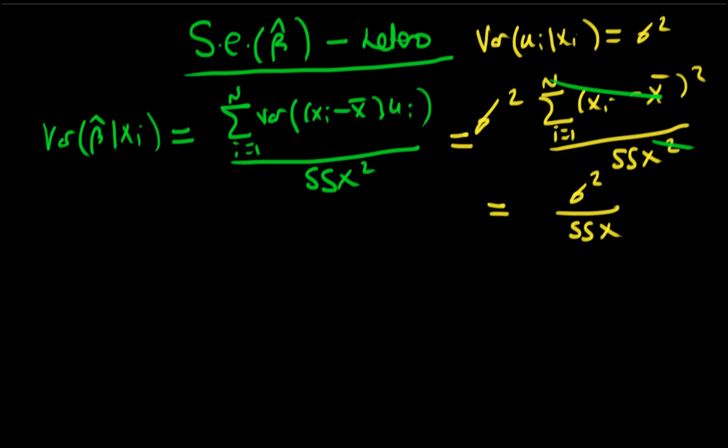Okay, so that was what we got in the presence of homoscedastic errors. In the presence of heteroscedasticity though, we can't make this sort of simplifying assumptions, or some of the simplifying assumptions which we made in deriving that particular variance.